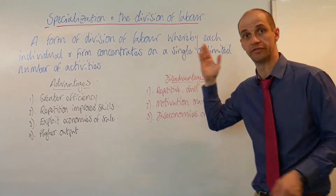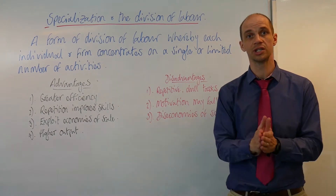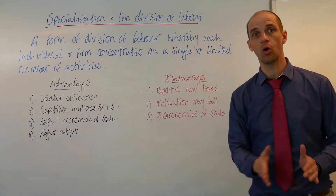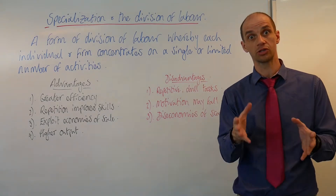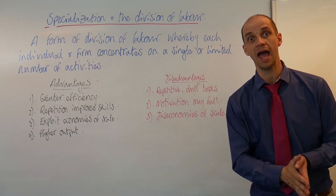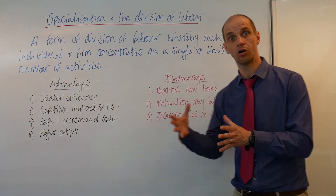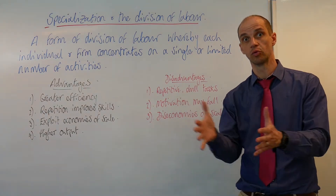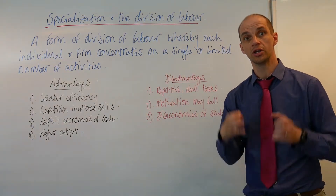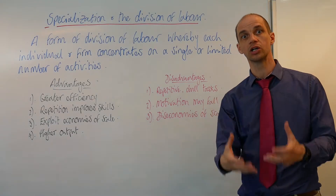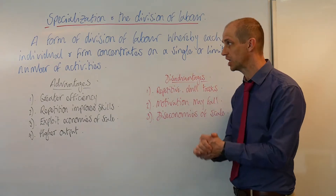Specialisation is a form of division of labour whereby each individual and firm concentrates on a single or limited number of activities. For example, within a car production facility, you would have a particular factory which actually builds the engine of a car. That engine would then be dispatched to another facility where it would be put into the car body itself, and that factory would specialise in the overall assembly of that car. So you really do break down the tasks and make sure that your workers and factories become brilliantly efficient in producing that particular output.